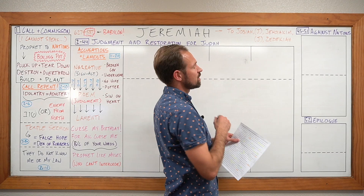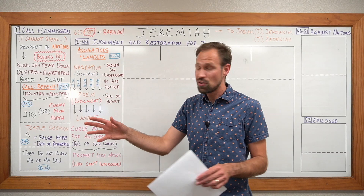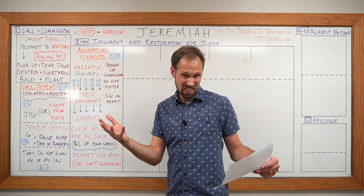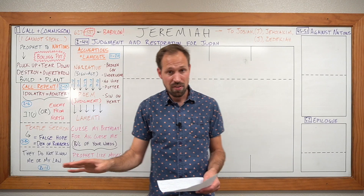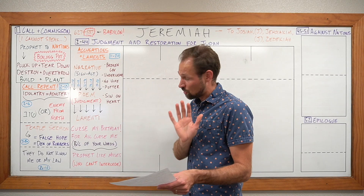Remember, Jeremiah's message to Judah in their final 22 years came in two stages. Stage one: repent of your idolatry and injustice and maybe God will spare you from the boiling pot coming from the north. But then stage two: you have passed the point of no return. Babylon is coming and there's nothing you can do about it.